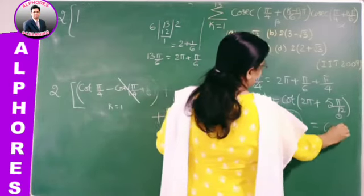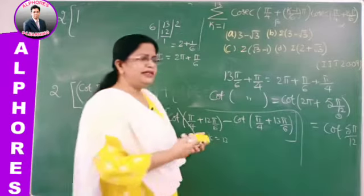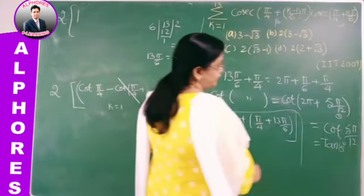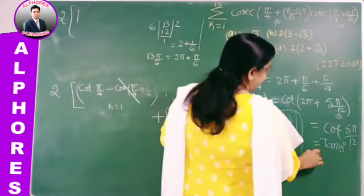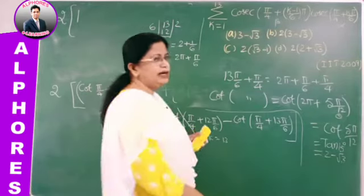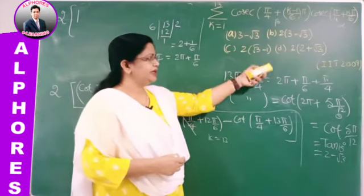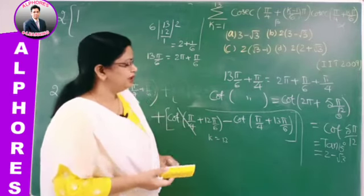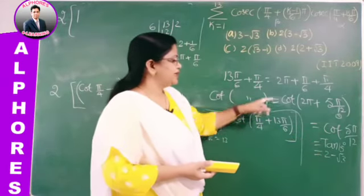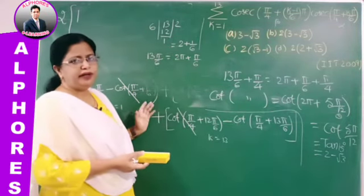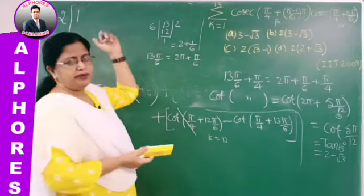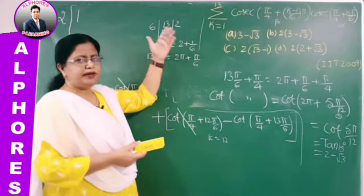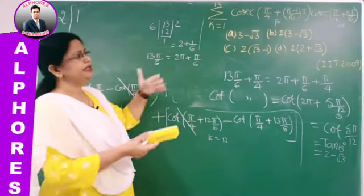Similarly each subsequent term gives cot 46° − cot 47°, and so on up to the last term: the numerator sin(90° − 89°)/[sin 89°·sin 90°] gives cot 89° − cot 90°. The full expression is (1/sin 1°)·[(cot 45° − cot 46°) + (cot 46° − cot 47°) + … + (cot 89° − cot 90°)]. This telescopes to (1/sin 1°)·[cot 45° − cot 90°].